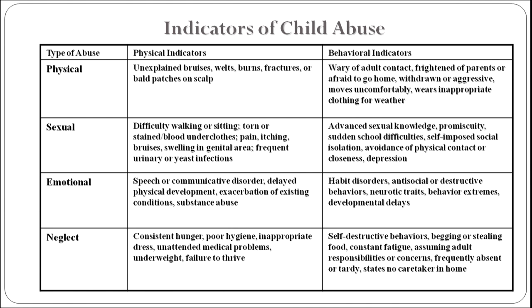Third, emotional abuse. Physical indicators include speech or communicative disorder, delayed physical development, exacerbation of existing conditions and substance abuse. Behavioral indicators of emotional abuse include habit disorder, antisocial and destructive behaviors, neurotic traits, behavioral extremes and developmental delays.